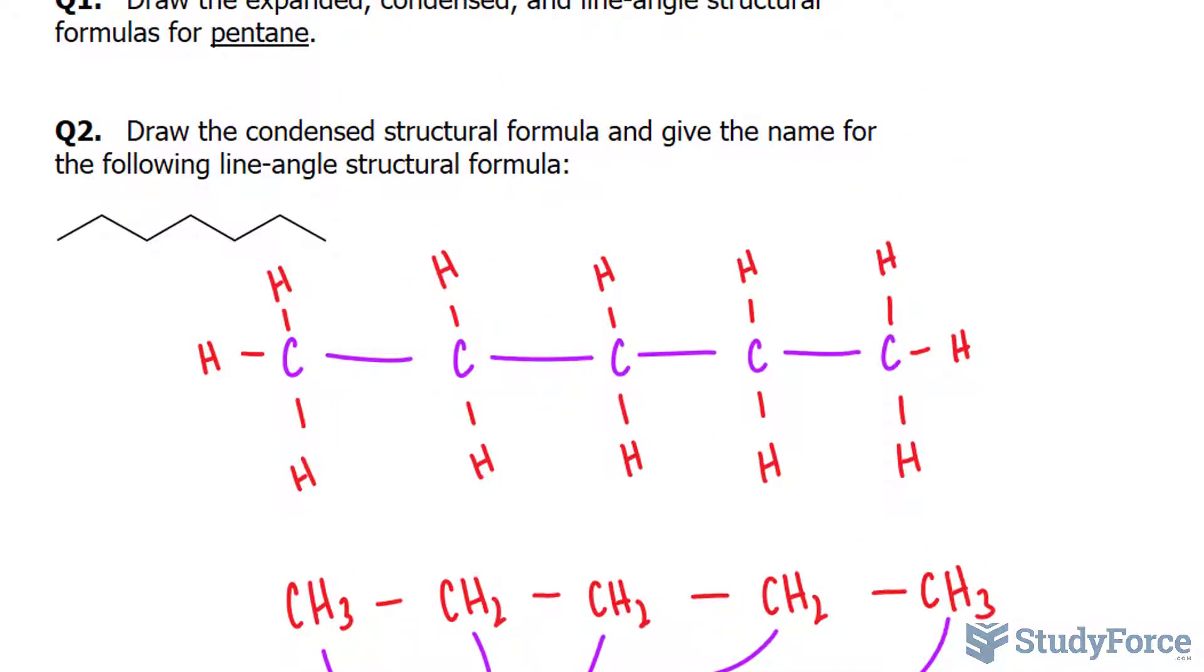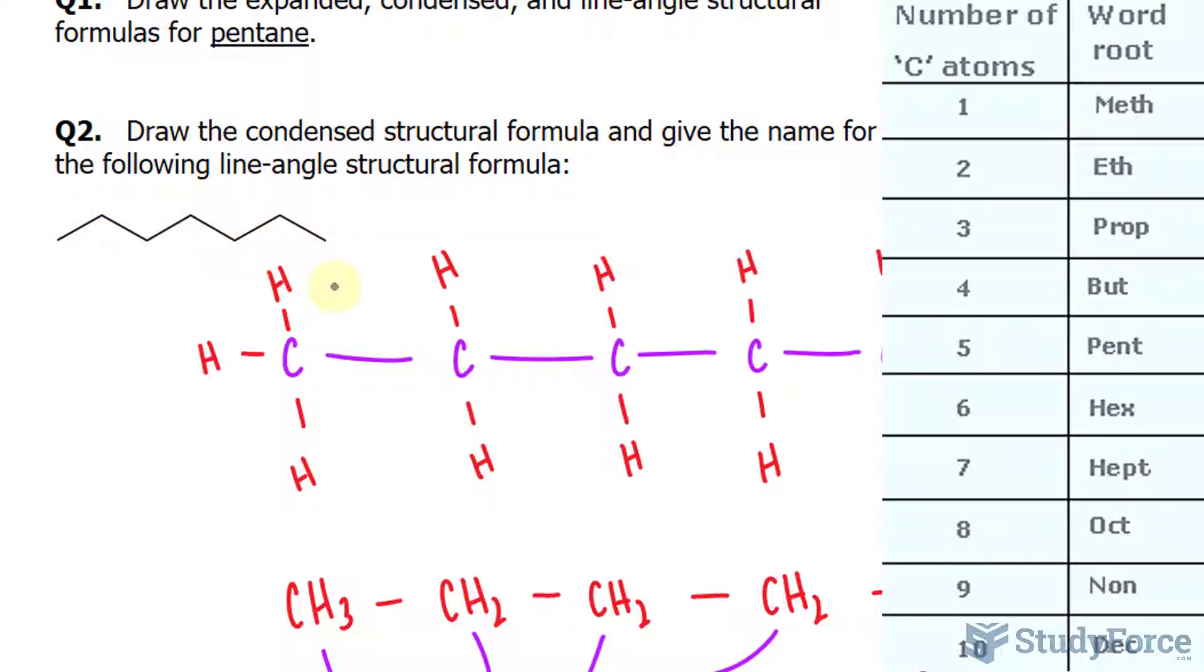We have to do this again for the following line angle structure. Let's see how many carbons we have. One, two, three, four, five, six, seven. Seven carbons means that this is heptane.